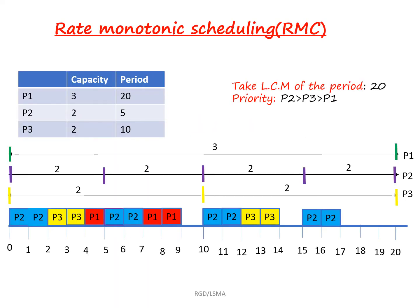If you look at this problem, we have three processes represented as P1, P2, and P3. Each and every process has a capacity of execution. The P1 process has to execute three times over a period of 20, P2 process has to execute two times for every 5 interval, and P3 process has to execute two times for every 10 period.